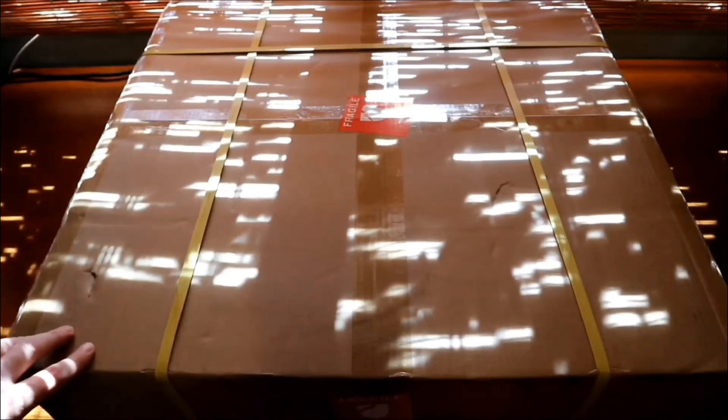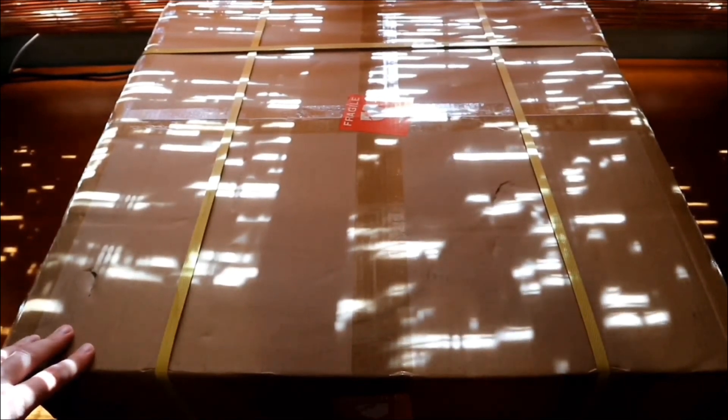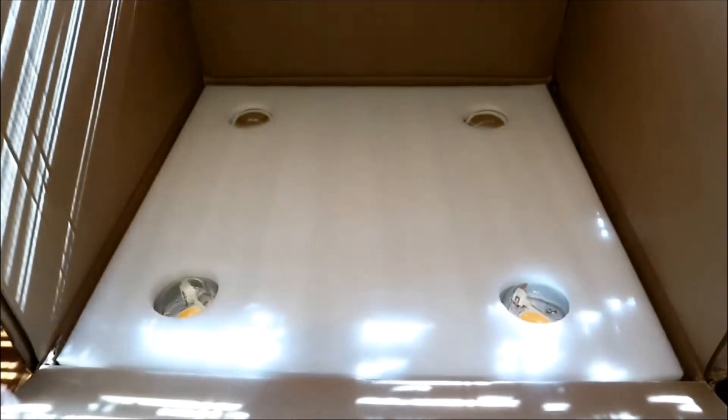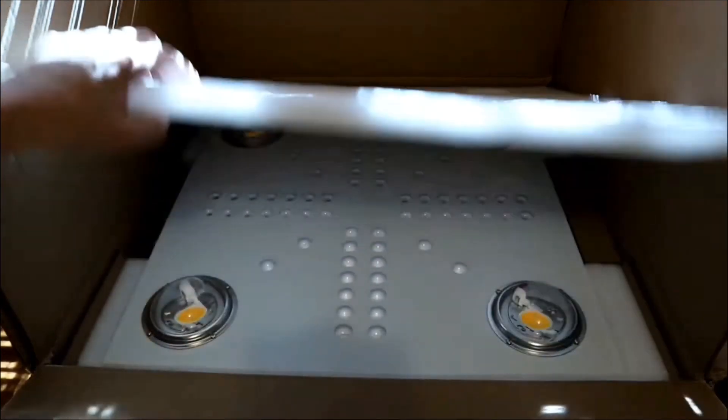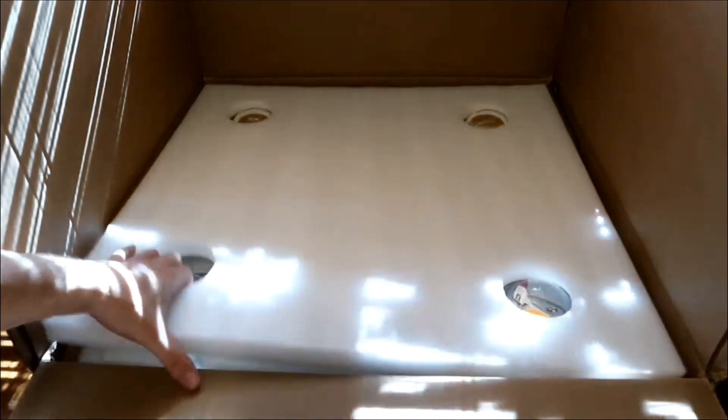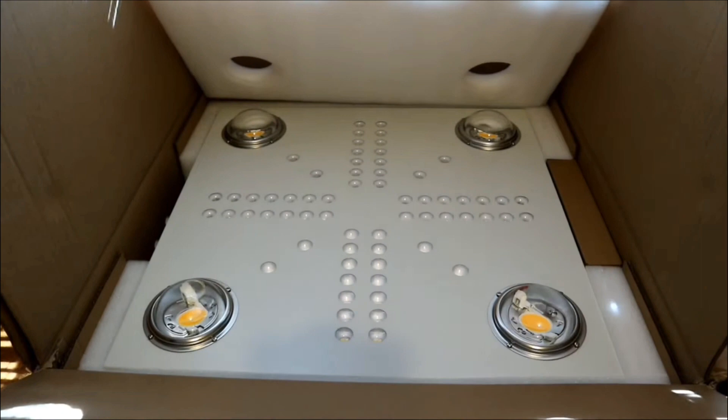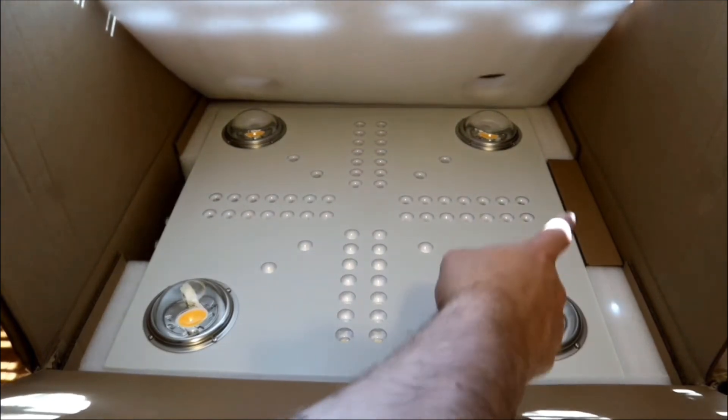Alright, so after opening her up, double boxed here, you can see. Got the nice thick foam surrounding it. You got your power cord and your ratchet ropes in that little box there. And then yeah, that's what we got there.